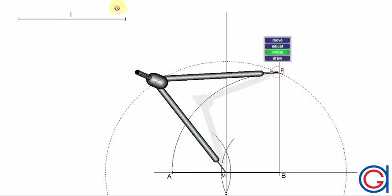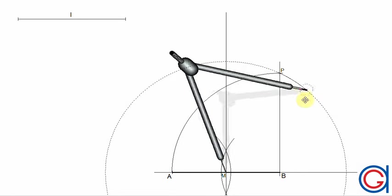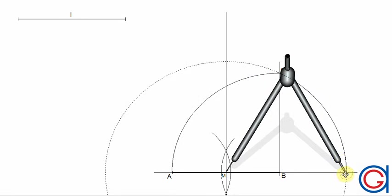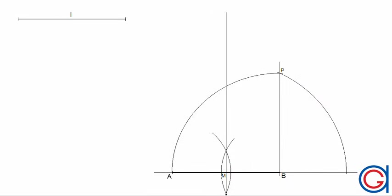So, the next step is centering our compass on point M and radius MP. We scribe an arc to the right, until it intersects the prolongation of the segment AB, as can be seen on the video. And we will call this point Q.